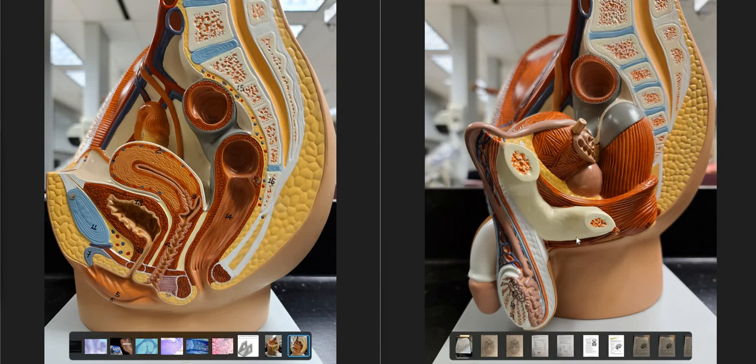Each system has gonads. So the male version would be the testes. Female version is going to be the ovaries. And this is where our sex cells are being produced. Both systems have erectile tissue as well. So the penis is going to correspond with the clitoris, which is not visible from this perspective, this mid-sagittal view of the model.